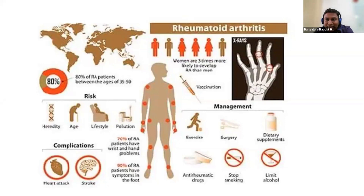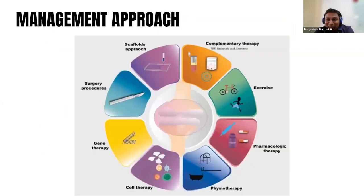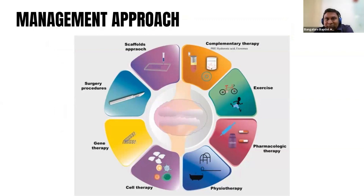Exercise, dietary supplements, and avoiding smoking and alcohol can help prevent progression. If you don't treat this, your joints can get damaged. Coming to the management approach, it can be broken into multiple parts: exercise, medications, physiotherapy, and recently with advanced technology, various genetic and gene therapies, surgical aspects, and multiple other things.